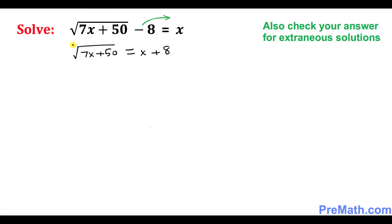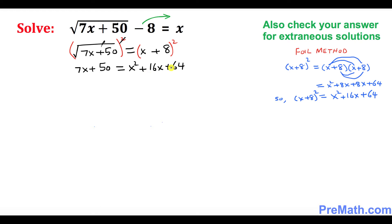Now we want to get rid of this radical or square root by squaring both sides. The square and square root undo each other, so we got 7x plus 50 equals x plus 8 squared. We'll be using the fact that (a + b)² equals a² + 2ab + b². So that's going to be x² plus 16x plus 64.